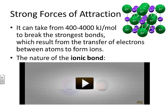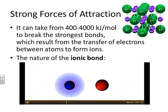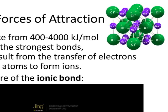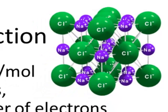It can take from 400 to 4,000 kilojoules per mole to break the strongest bonds, which result from the transfer of electrons between atoms to form ions. In this video, as two atoms come close to each other, you can see electrons being transferred from the element on the right to the element on the left — its electron cloud diminished while the other became more pronounced. Sodium chloride is an example of an ionic compound, as shown in the upper right-hand corner.